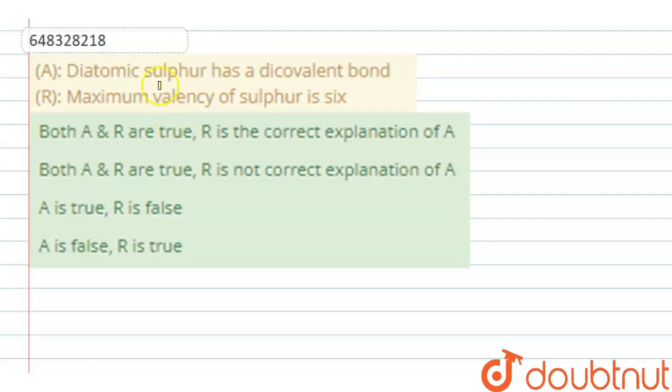Dear students, the question here is an assertion-reason question. Assertion is: diatomic sulfur has a dicovalent bond. And reason is: maximum covalency of sulfur is 6.